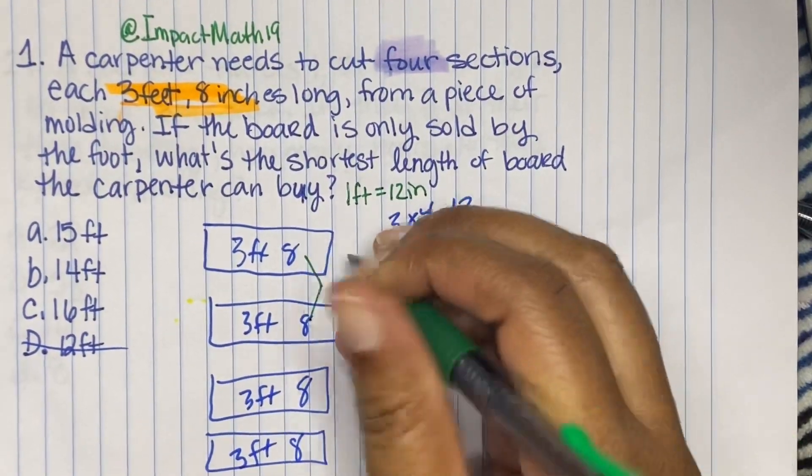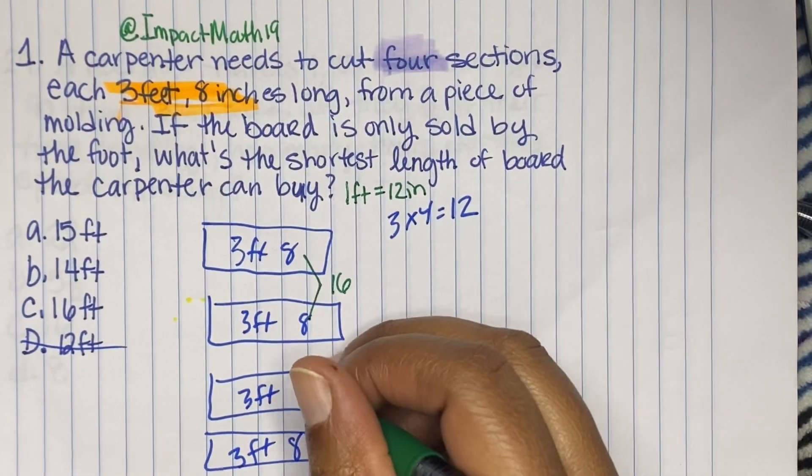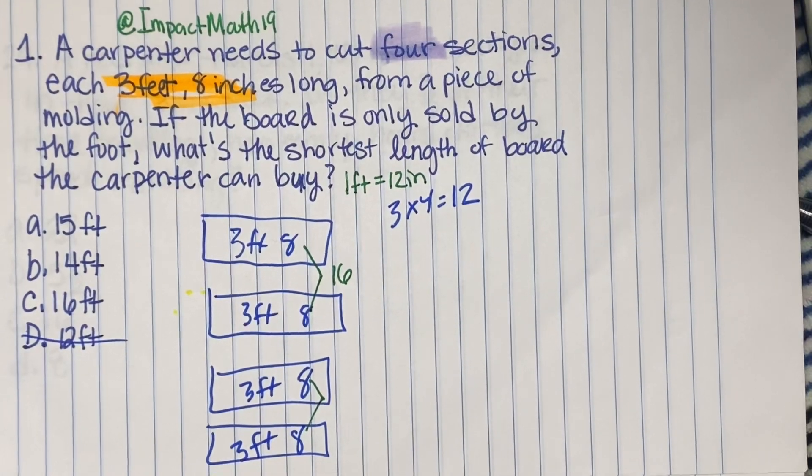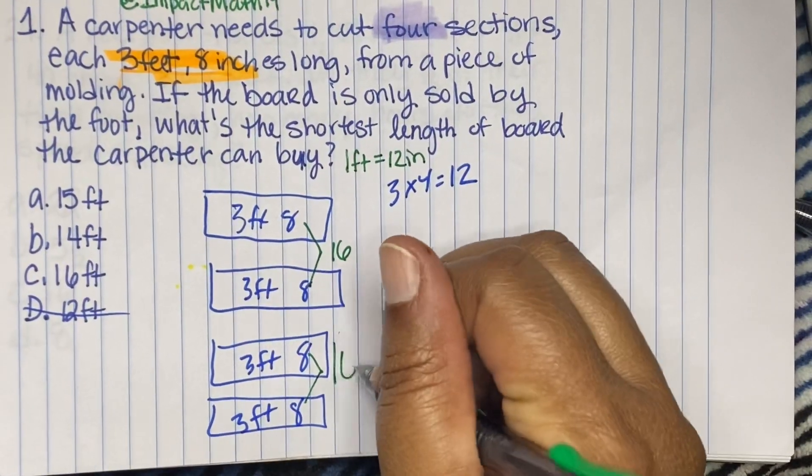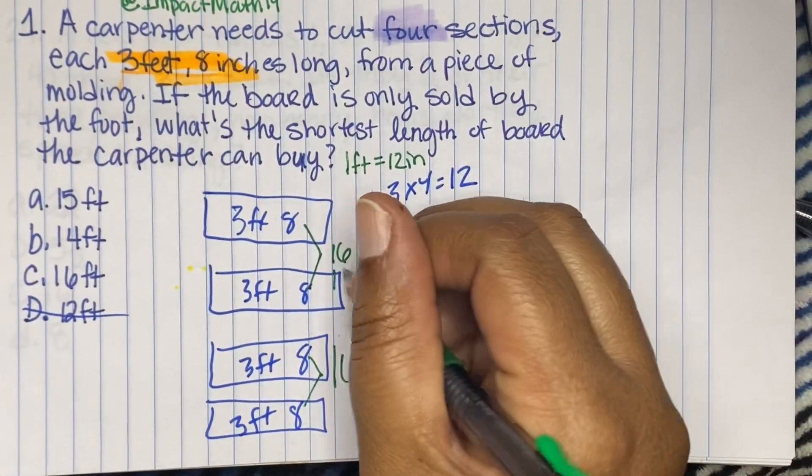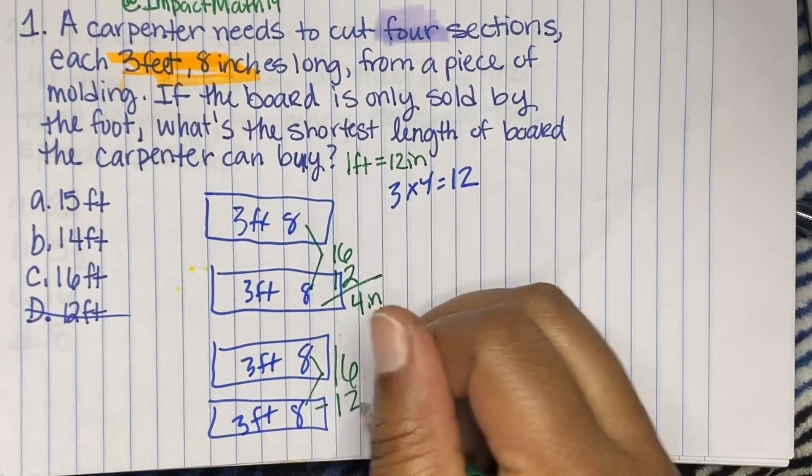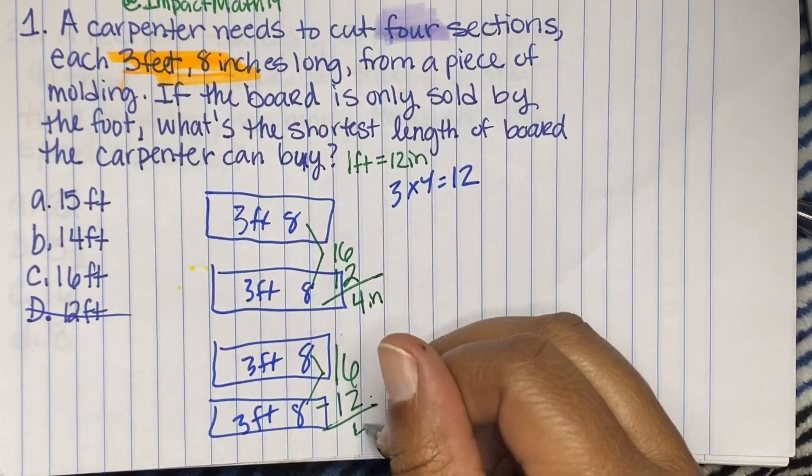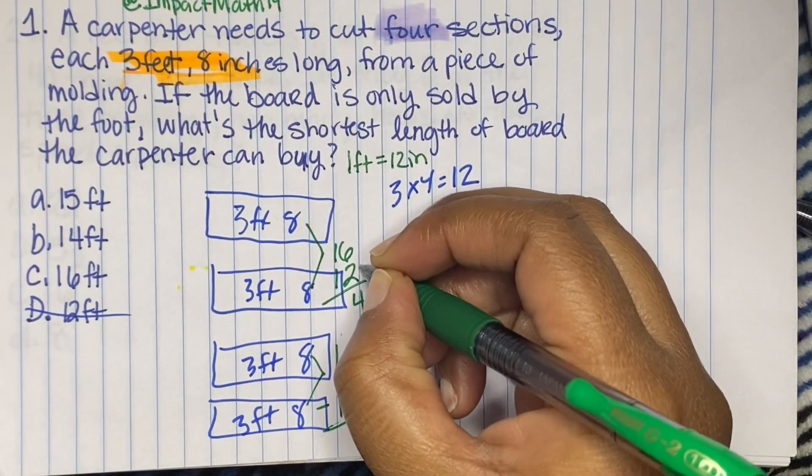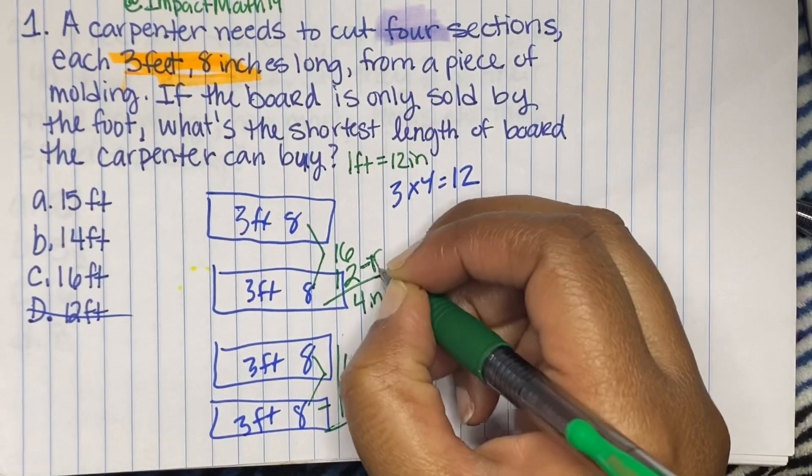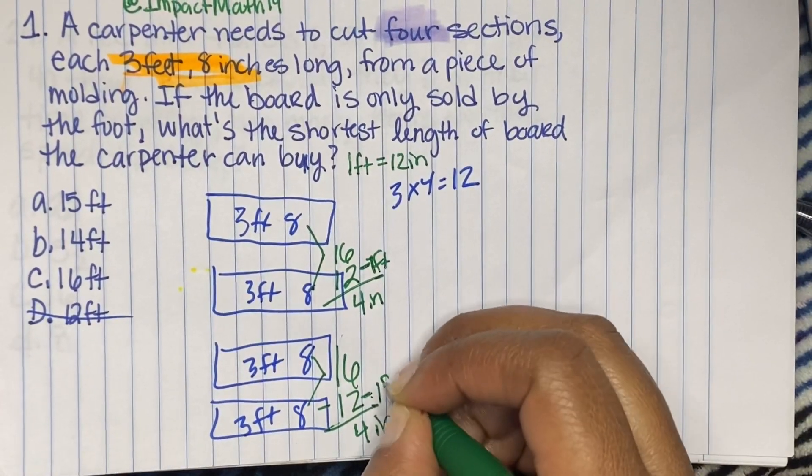So if we add up this eight, we get 16. And if we add up these two eights, we get another 16. So if we minus 12 inches from here, we're going to have four inches left over here. And if we minus 12 inches here, we have four inches left here.